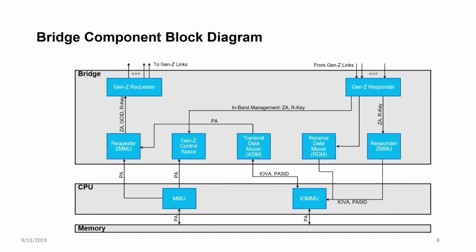I mentioned that bridges are the Gen Z device that connects the CPU into the fabric. Here's a block diagram of an example bridge. This bridge block diagram is a marginally fictionalized version of a bridge that HPE has built and reported on at Hot Chips a couple of weeks ago. So if you want to find out more about that bridge, you can look up that presentation. In the middle of this diagram is the CPU, which has, of course, MMUs and often IOMMUs these days. So these are standard CPUs with their local memory.